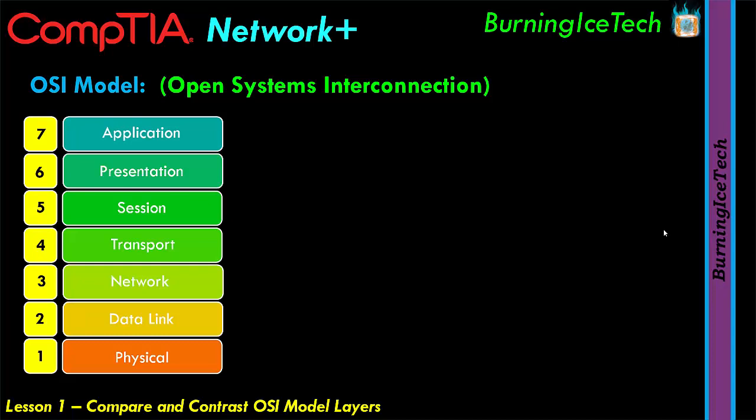What I'd encourage you to do throughout the Network+ course — not just with the OSI model — is go through your Network+ manual, whether physical or digital, and look for any abbreviations you find. If you find an abbreviation you already know, like LAN meaning local area network, skip it. But any abbreviation you find online or in your studies that's related to the Network+ course and you don't know the meaning of — write it down and memorize it.